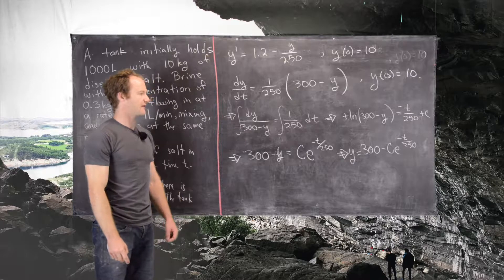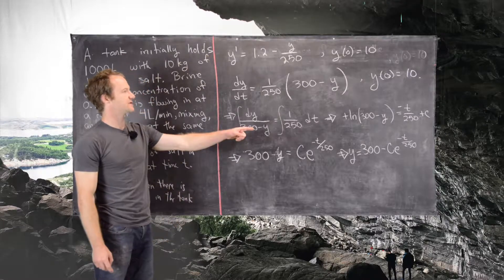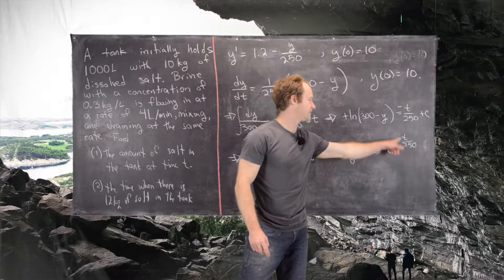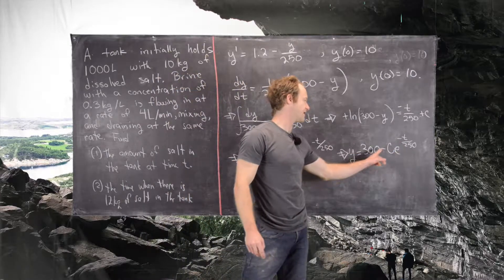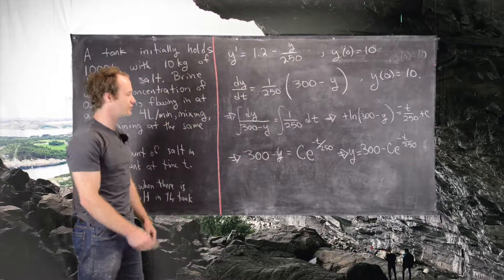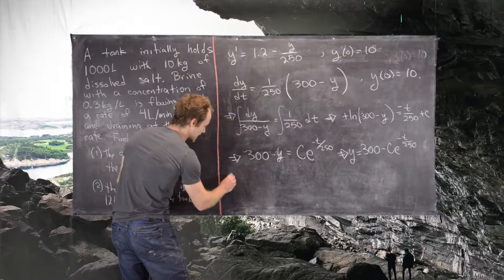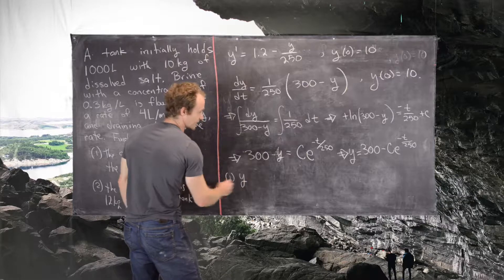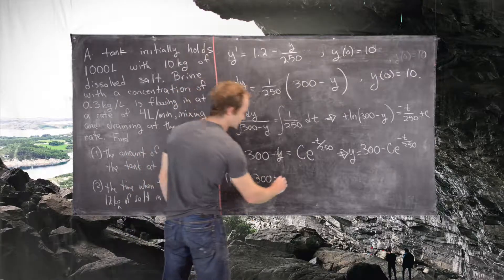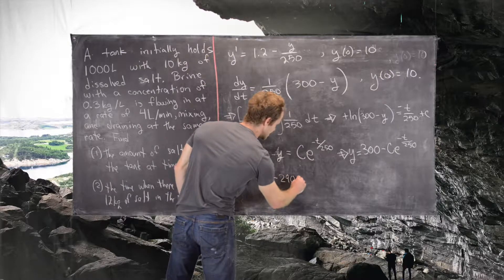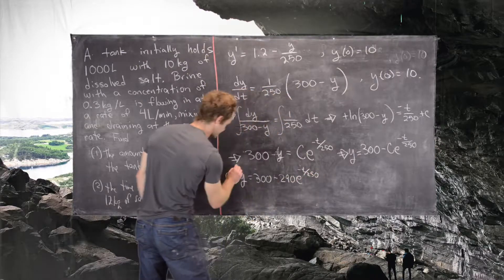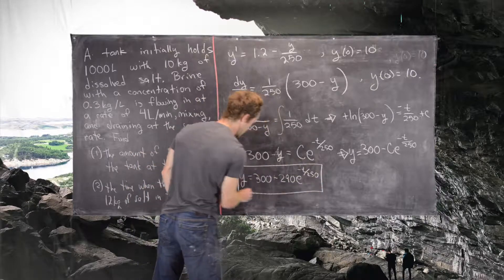Now we need to figure out what that c is. Notice that y of 0 equals 10, and if we plug 0 into this equation, we get 300 minus c equals 10. So that means c equals 290. So that gives us a solution to this first problem: y equals 300 minus 290 e to the minus t over 250. We've gained a solution to this first question.